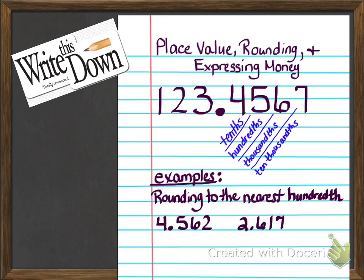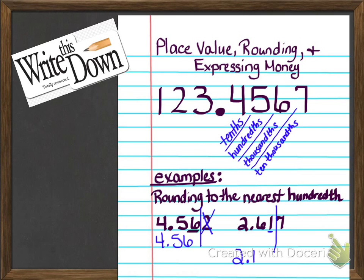To round to the nearest hundredth, locate the hundredth spot — that's the second digit after the decimal. In the first number, that's the 6, so I look to the number on its right. Drawing the door there, I drop off the 2. Is it 5 or more knocking on my door? No, so I knock out that 2 and the answer is 4 and 56 hundredths. For the second example, the hundredth spot is where the 1 is. Knocking on the door is a 7 — that's 5 or more, so I raise the score. That one becomes 2 and 62 hundredths.